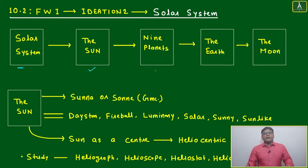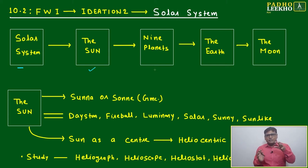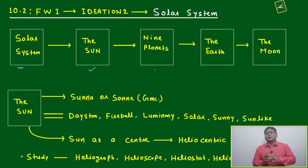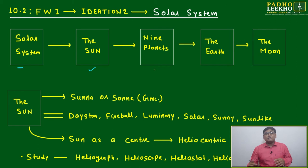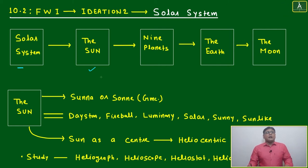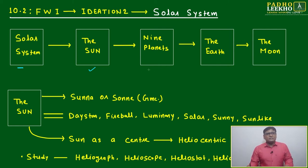From the sun we are coming toward the earth, because finally we have to study about the earth. Most of the vocabulary will come related to the earth or whatever is living on the earth. From the solar system, we are coming to the earth.